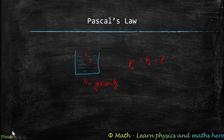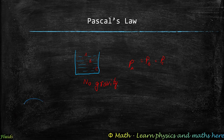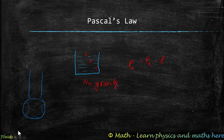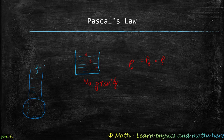Pascal's law also allows us to derive atmospheric pressure. The atmosphere is made up of gas, which is also a fluid. Assuming this is Earth with a huge column of air above it, we do a rough estimate assuming the atmosphere's density does not change with height, and that the atmosphere is roughly 15 kilometers high.